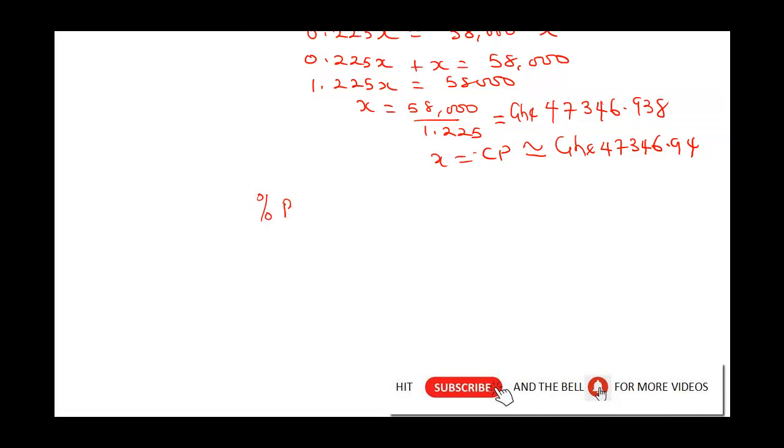Our percentage profit still remains selling price minus cost price all over cost price times 100 over 1. This is going to be, our selling price now is 61,200. Our cost price is going to be 47,346.94 all over our cost price 47,346.94, all multiplied by 100 over 1.